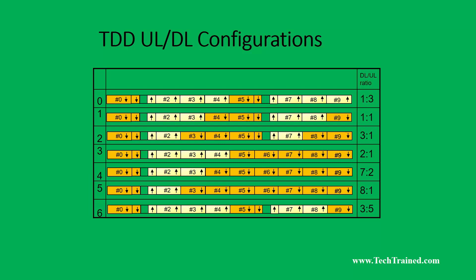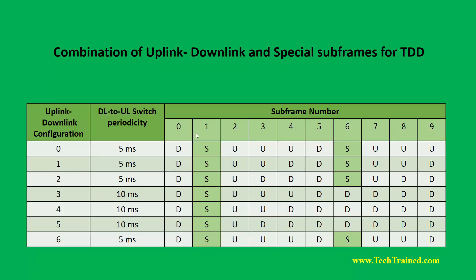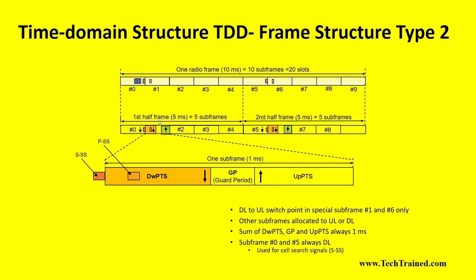Another important difference is the structure of the special subframes at subframe 2 and subframe 6. As shown in this slide, the switching subframe is expanded at the bottom. It contains a portion for downlink, followed by a guard period, and then an uplink portion. The guard period and the division between downlink and uplink portions within the special subframe is a separate topic, but it is a key structural element of TDD.